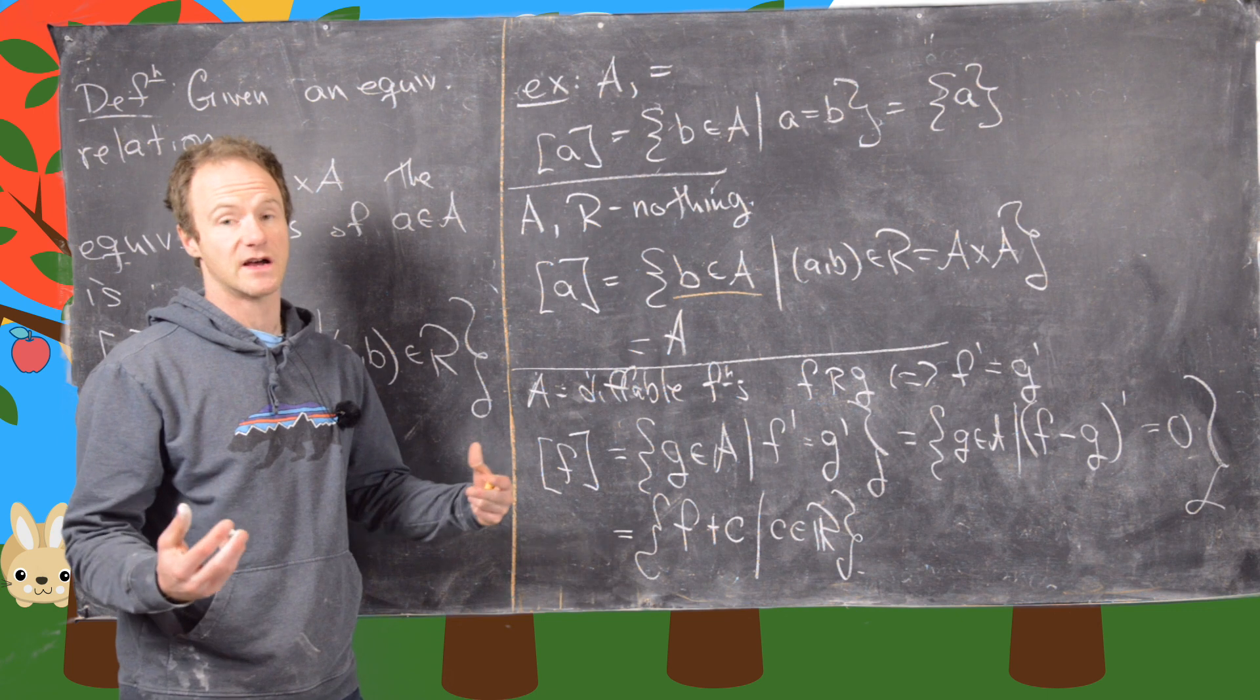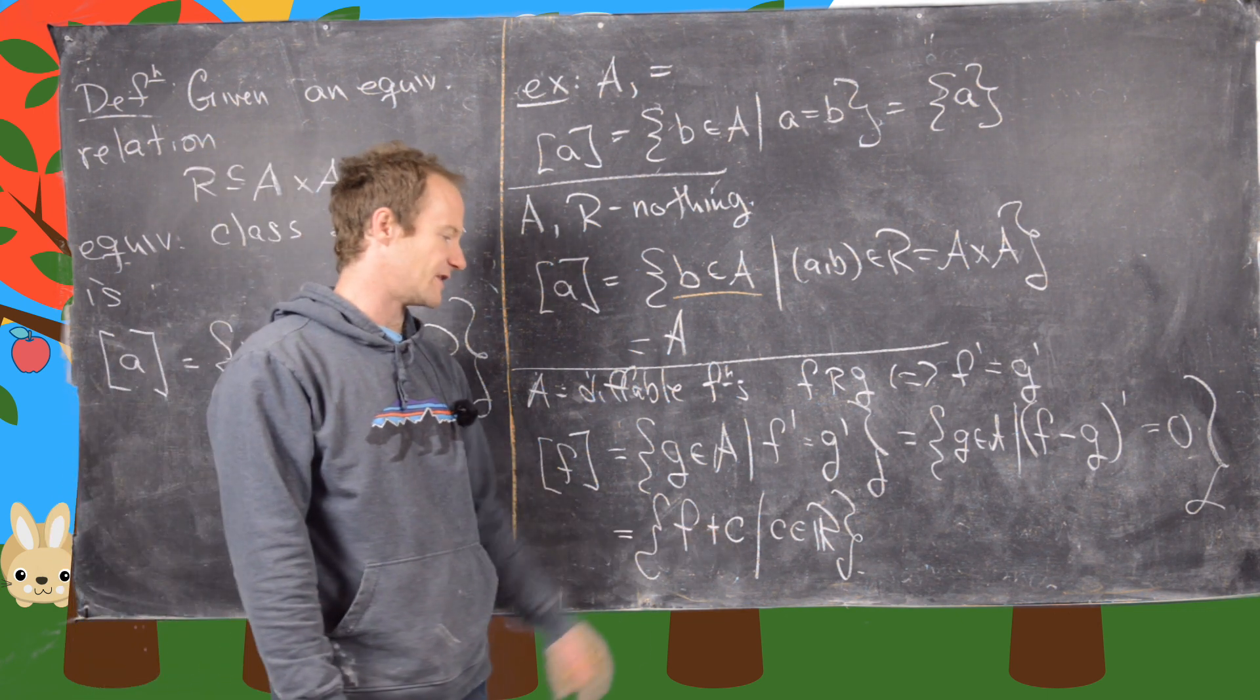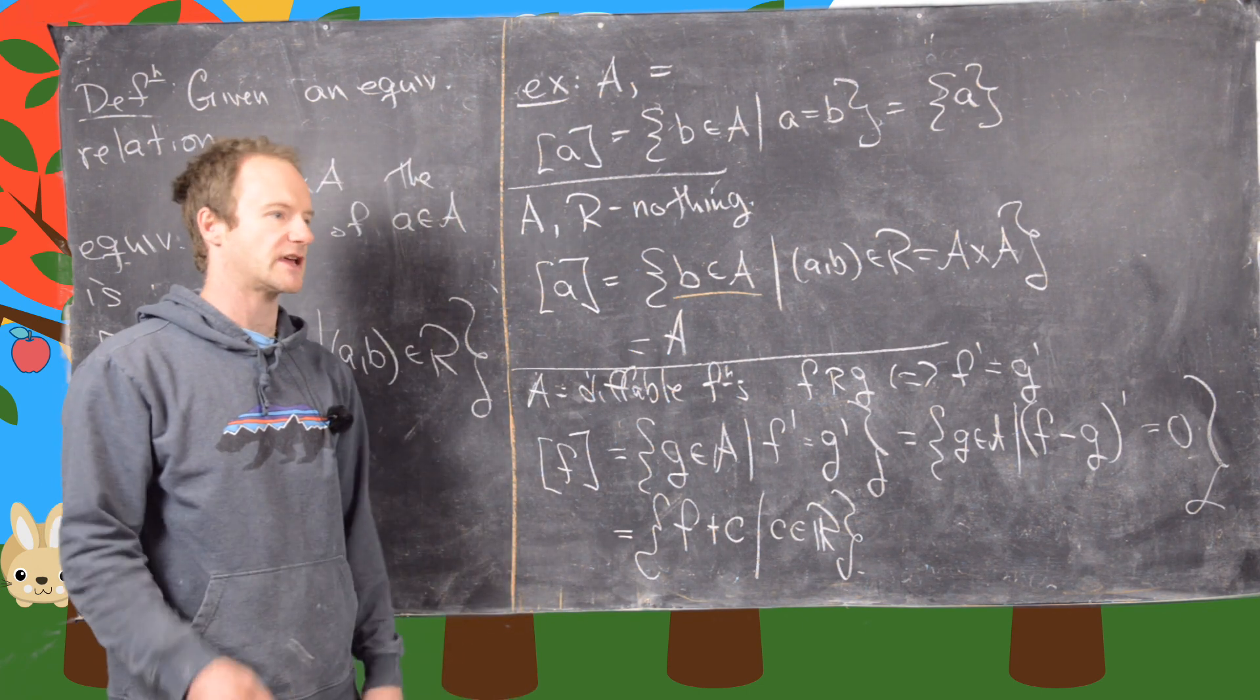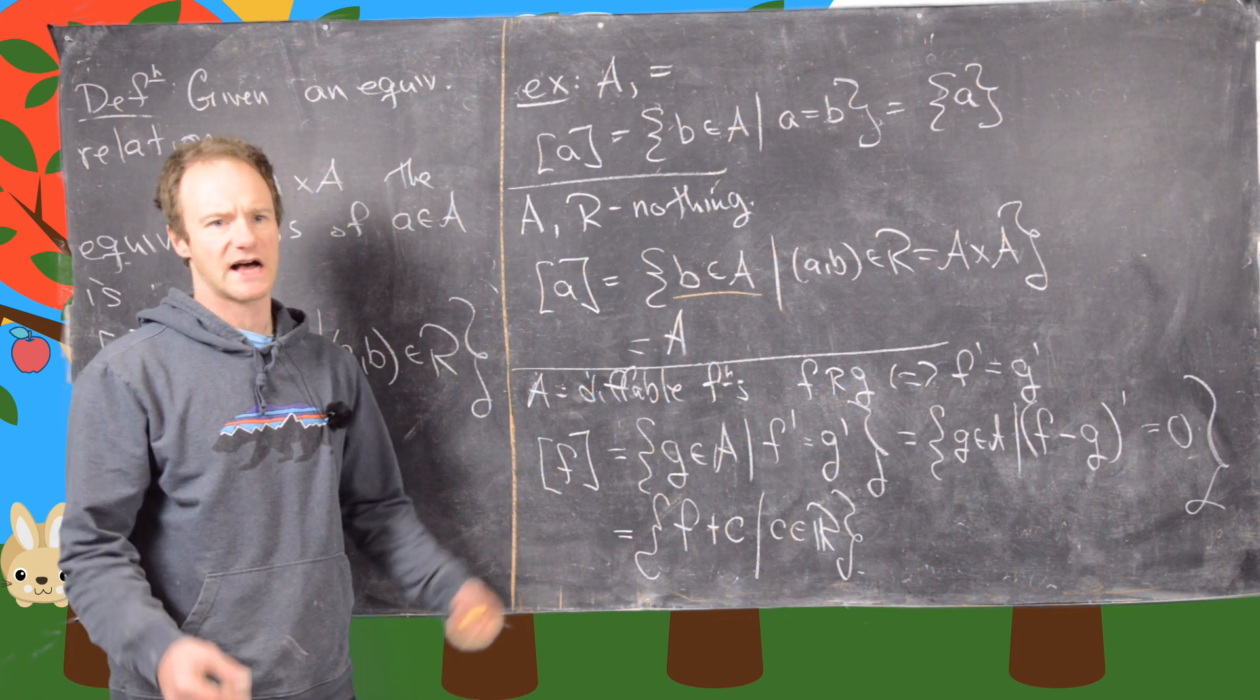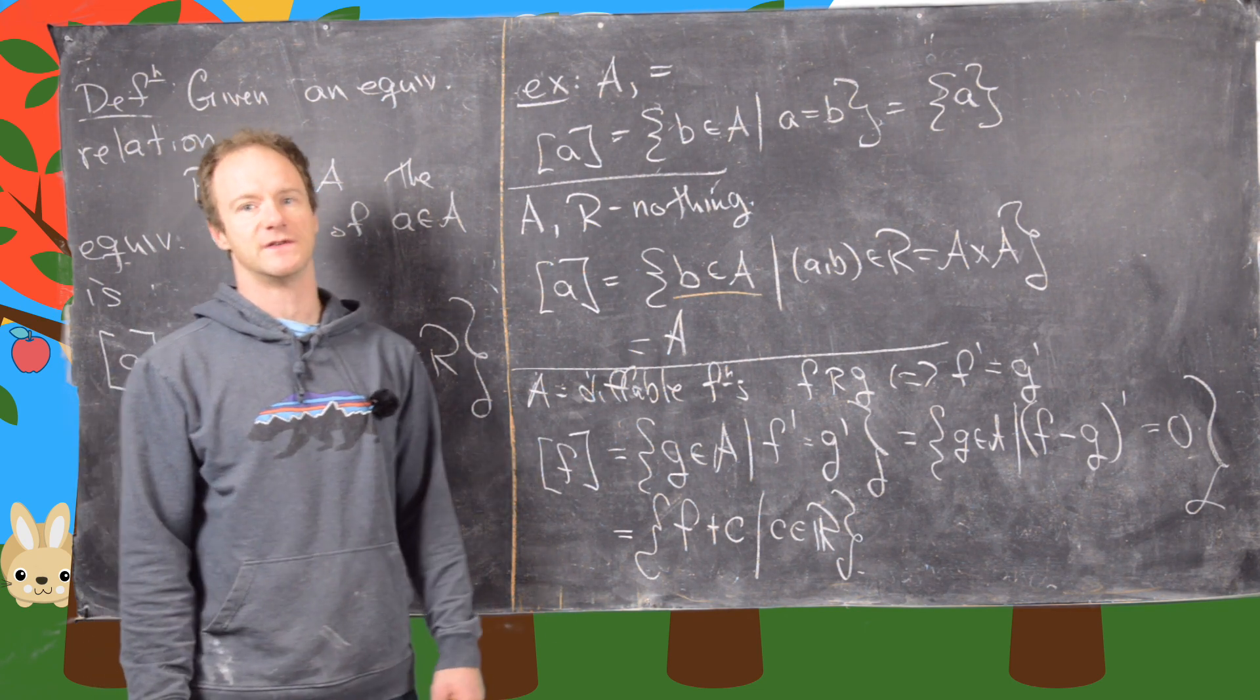So whenever you take an integral, so whenever you take an improper integral, you always have to add this constant on. So what you're actually looking at is the equivalence class of all antiderivatives in that case. Okay, good. So this is a good place to stop this video.